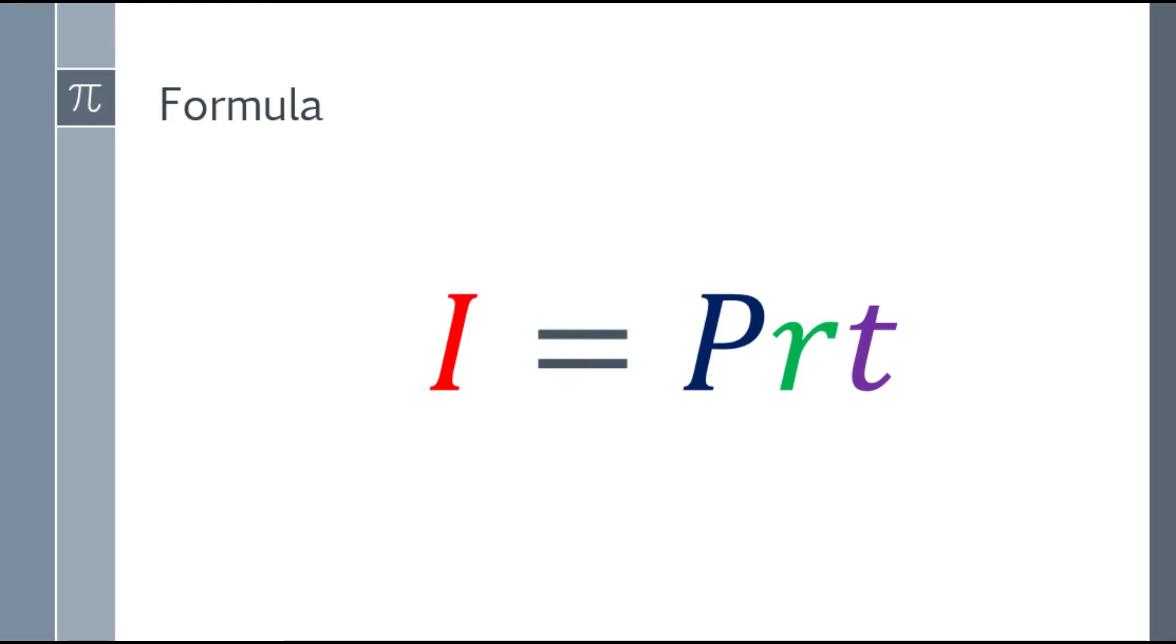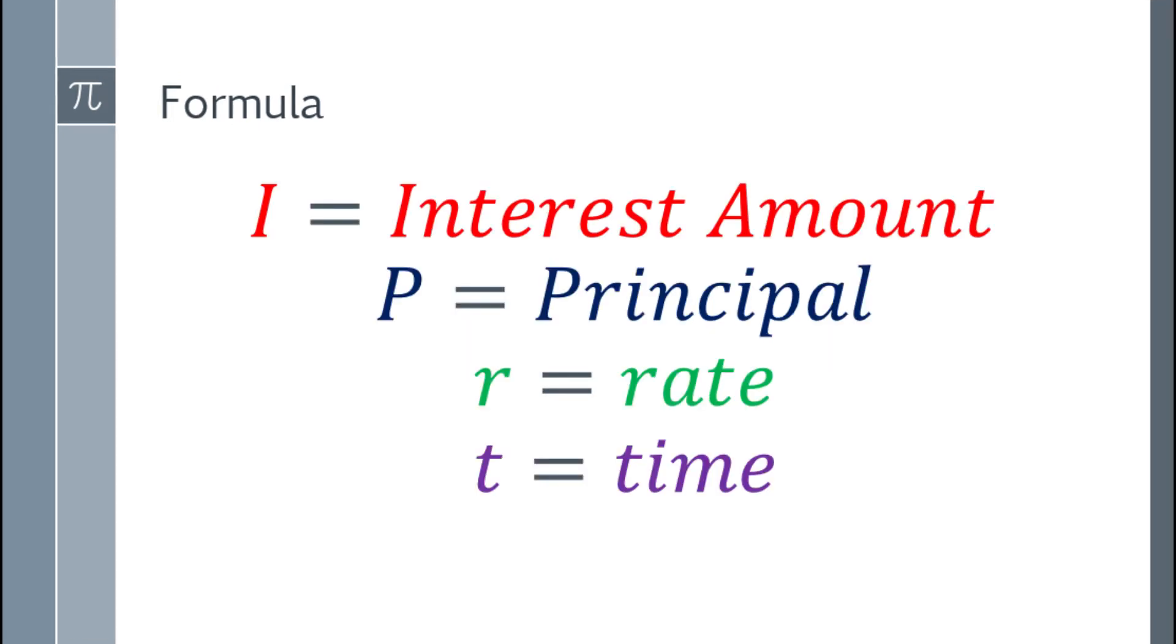So let's define the interest amount formula. We have I equals PRT. Now I is an interest amount, P is the principal, R is the rate, and T is for time.